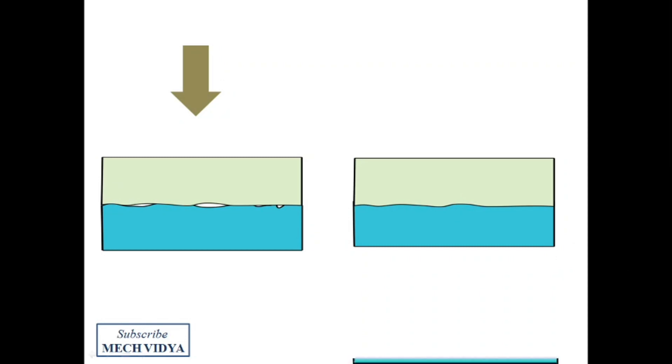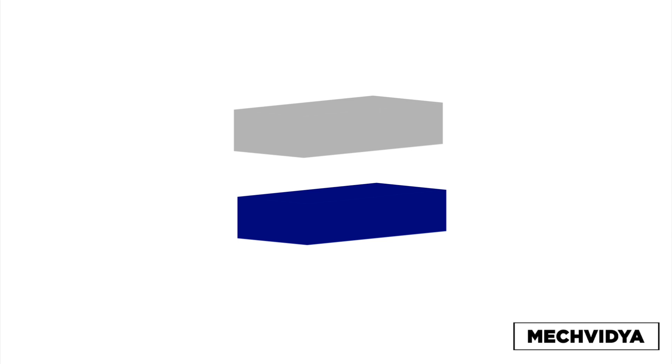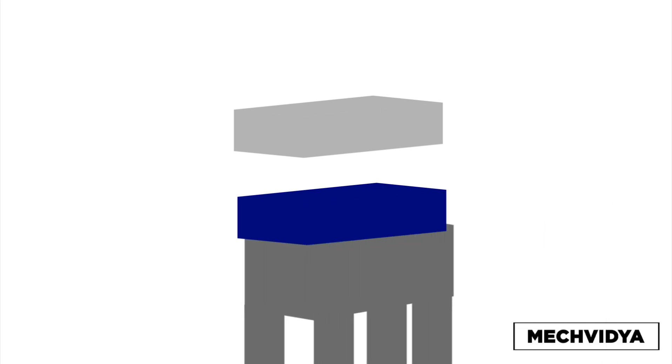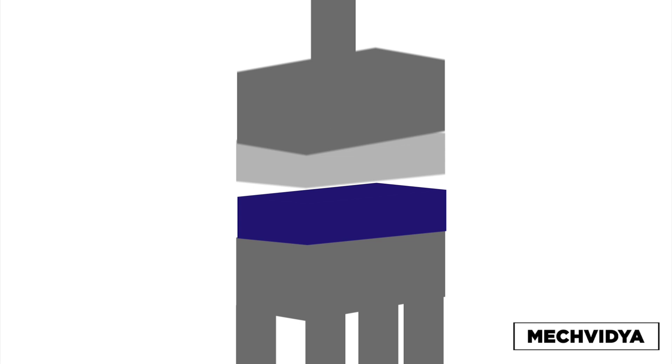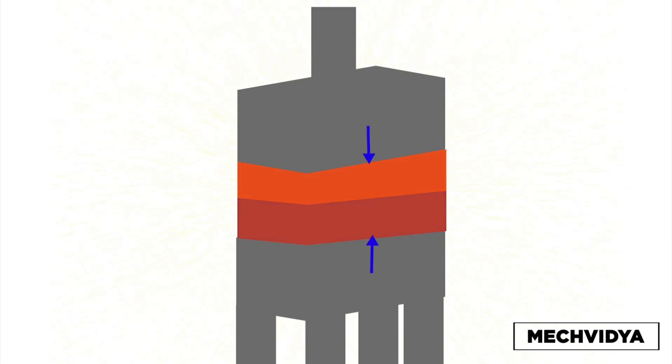Let us watch a very simple animation to understand this process. These are the workpieces to be welded. Now the two presses are introduced, pressure is applied, and the workpieces are brought in contact with each other.